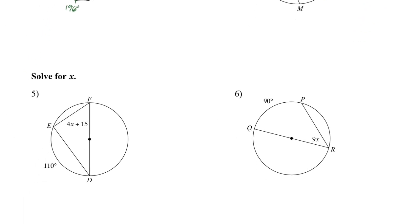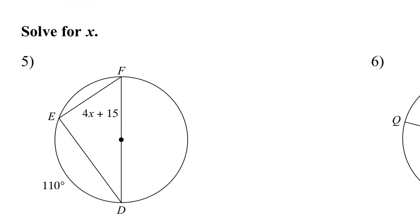Let's do this with a little bit of algebra. Let's do the algebra in this angle right here. It's the 4X plus 15. So 4X plus 15 equals to the arc that it intersects. That is this one here, so one half of 110. So 4X plus 15 equals to 55. Then I'm going to subtract the 15 on both sides. So 4X equals to 40. And then divide by 4. So X equals to 10 degrees.